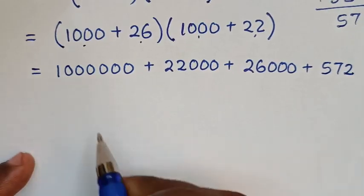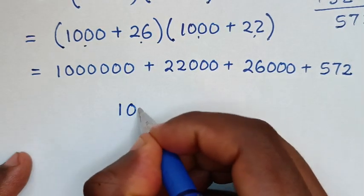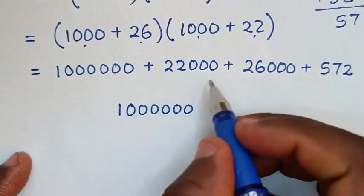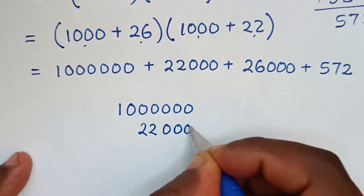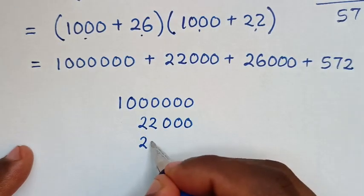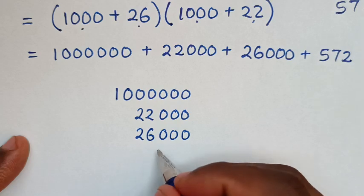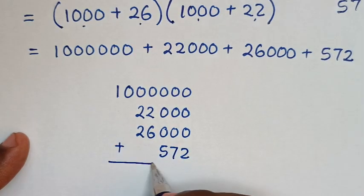Now let's add this together. So it will be 1 million plus 22,000 plus 26,000 plus 572.